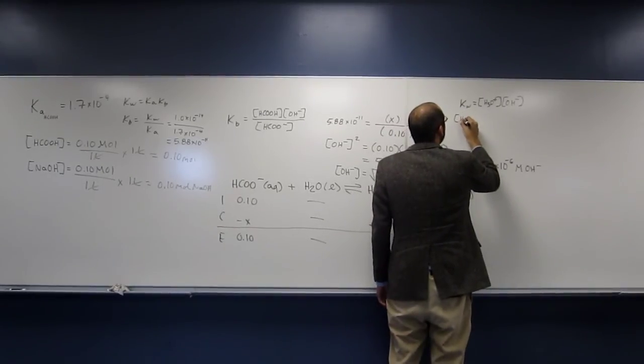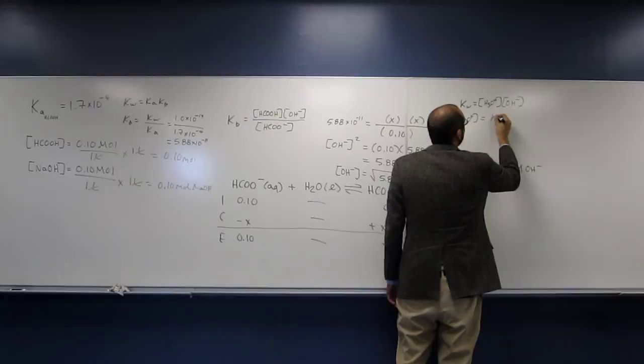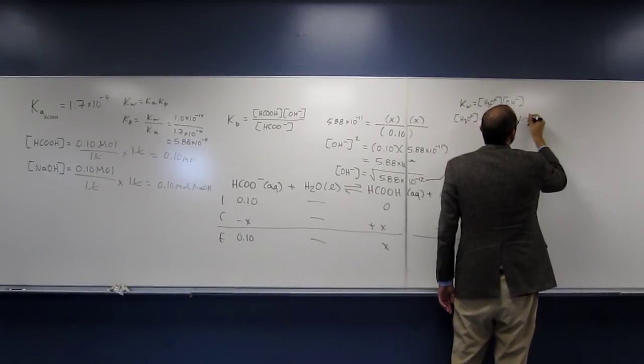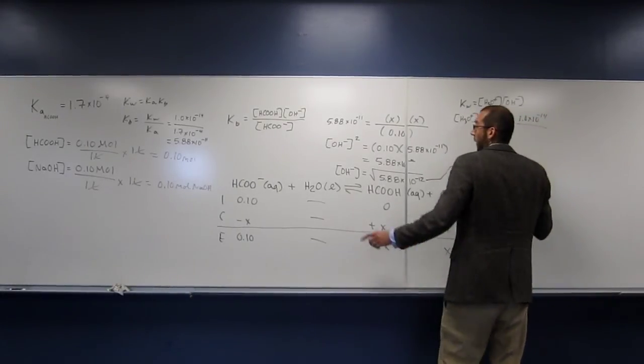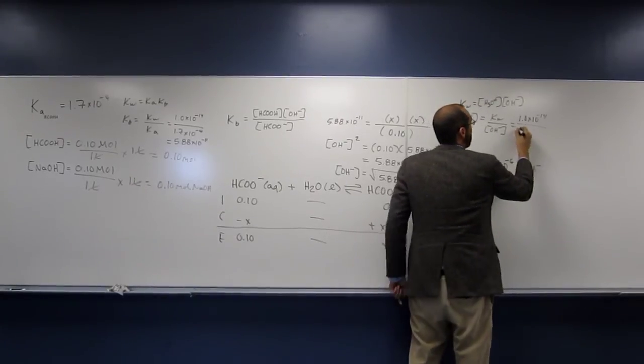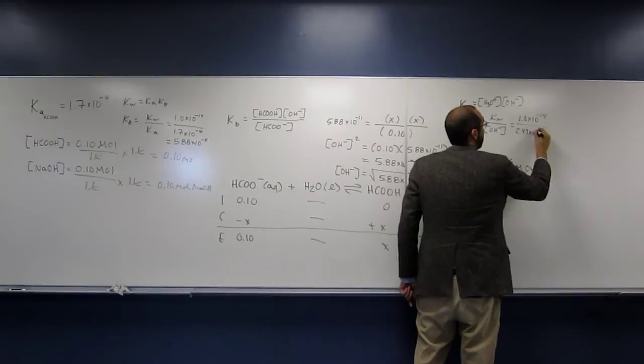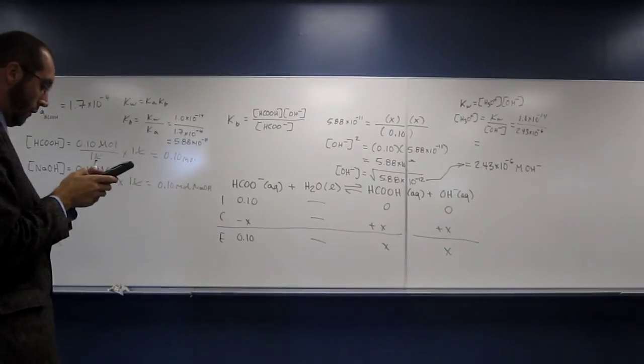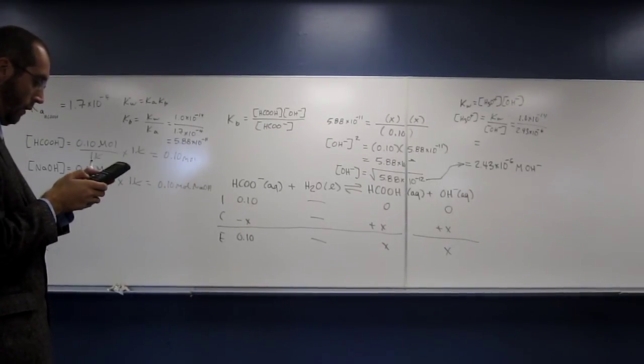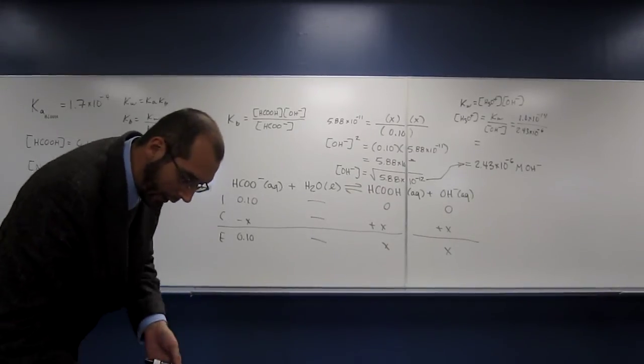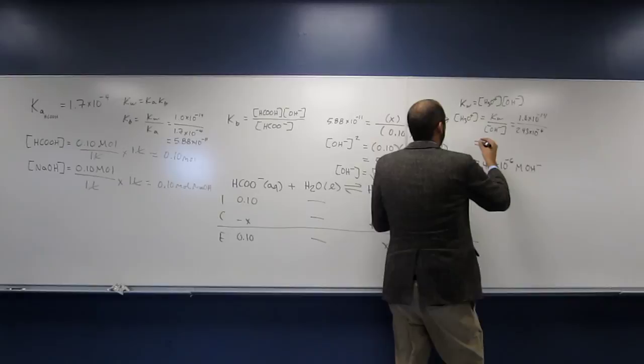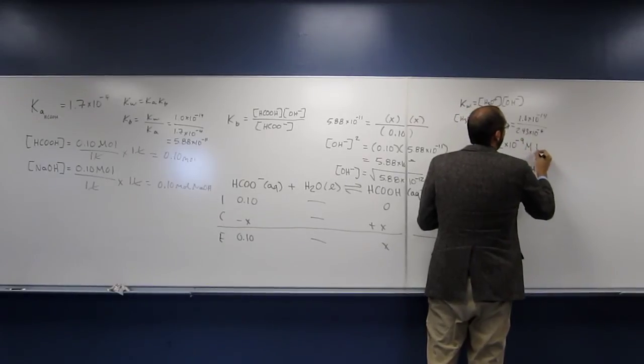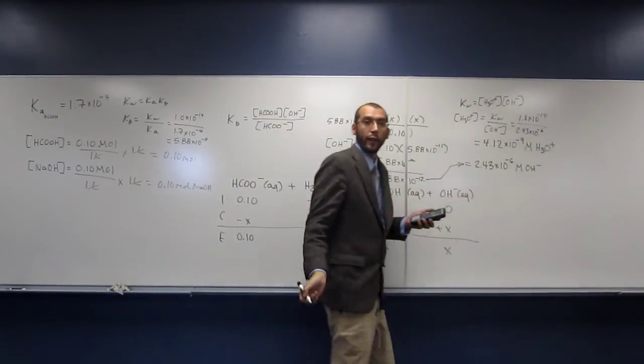So we can figure out what H3O plus is by saying KW divided by concentration of OH minus, which is going to be 1.0 times 10 to the negative 14th divided by 2.43 times 10 to the negative 6th. And when I do that, I get 4.12 times 10 to the negative 9th molar H3O plus.